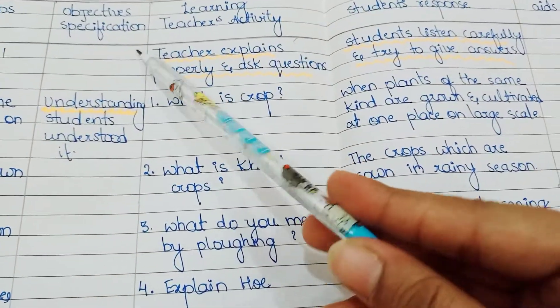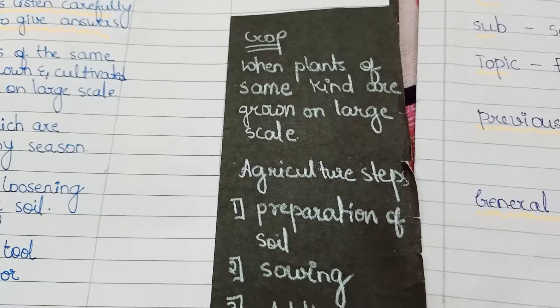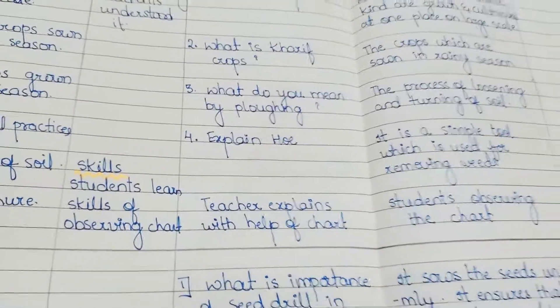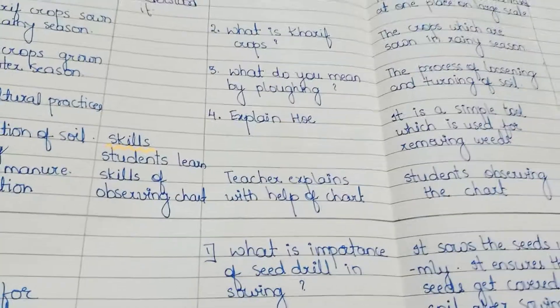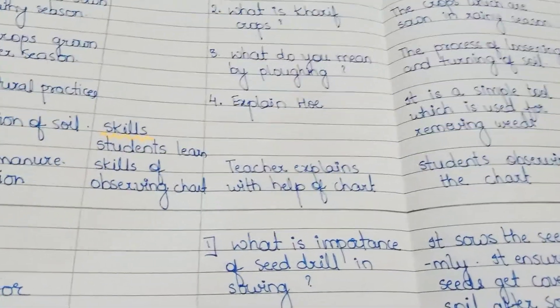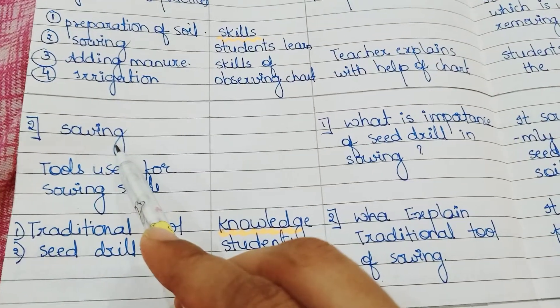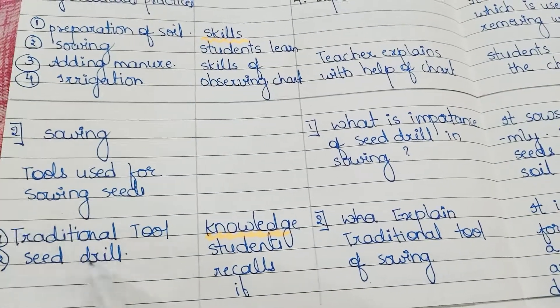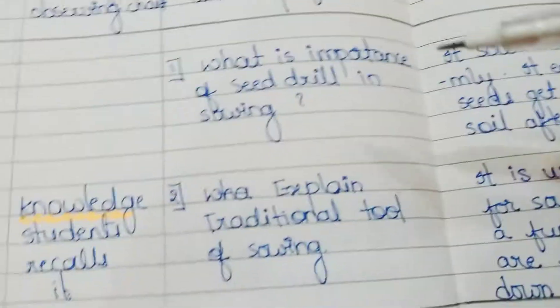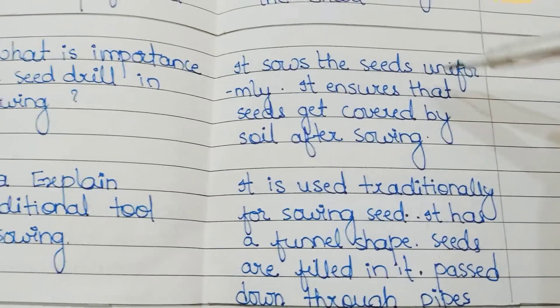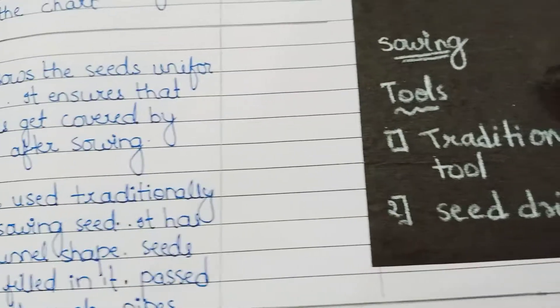Here you can see the objectives and specifications, and the blackboard work section. After explaining the content, we also use teaching aids — the teacher explains with the help of a chart and students observe the chart. Then for Presentation 2, we explain sowing to students, followed by related questions and answers, and more blackboard work.